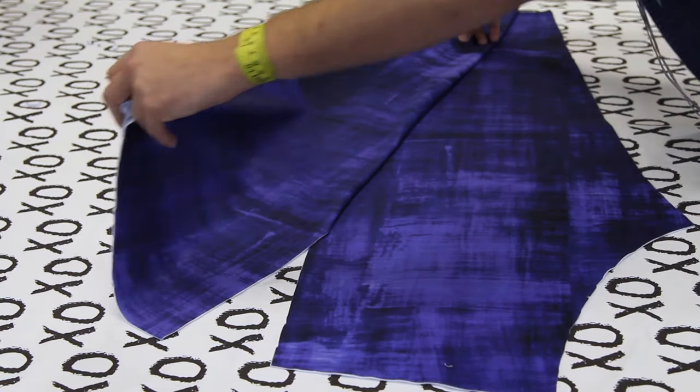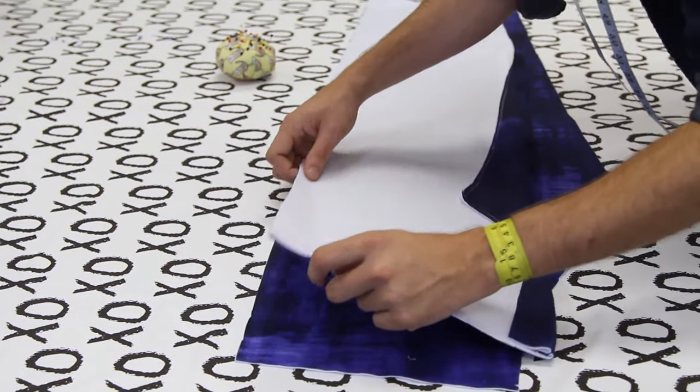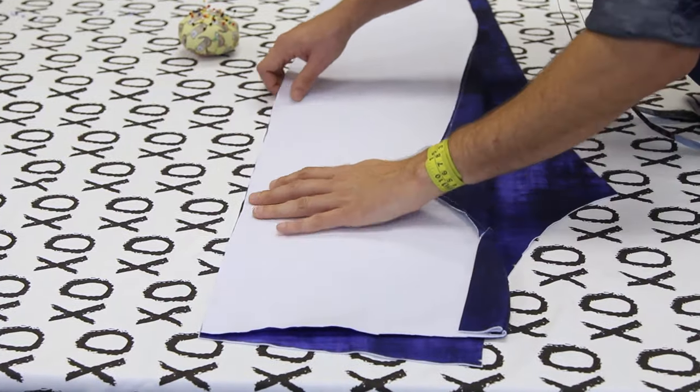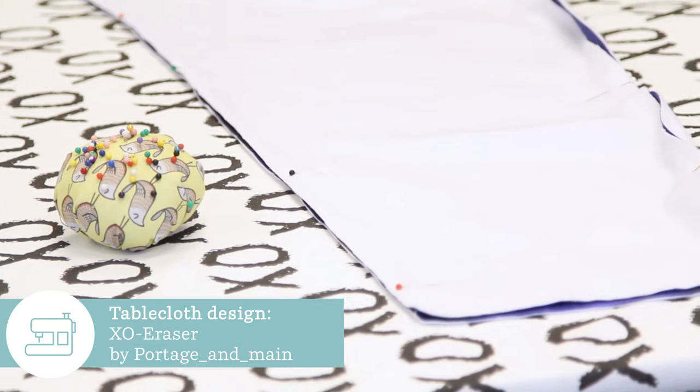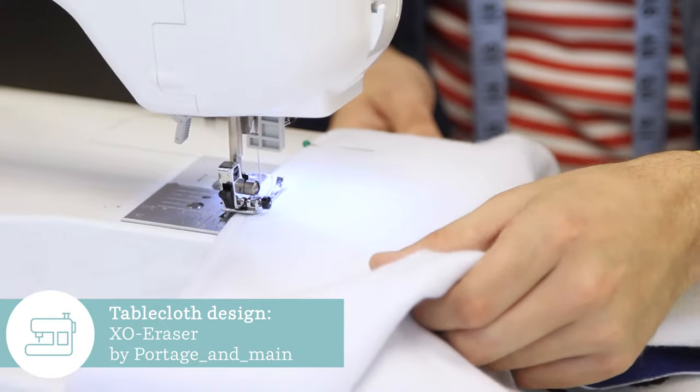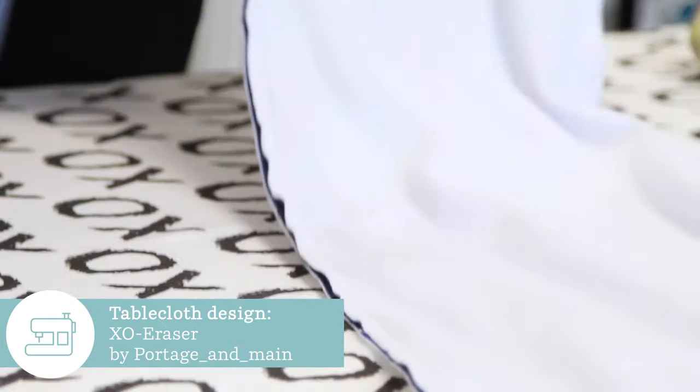Place the front leg and back leg together so that the right sides are together and pin. Stitch the inseam and side seams of both legs together.